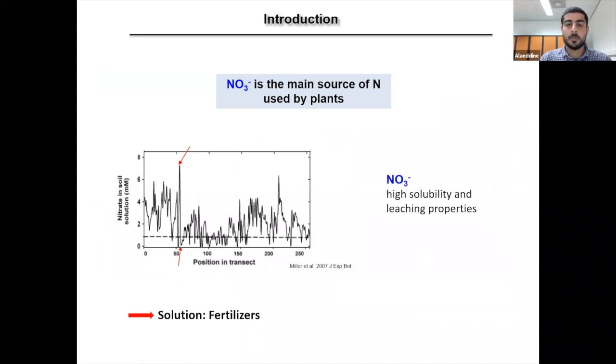We know that nitrate is the main source of nitrogen used by plants. But the problem of nitrate is that it has very fluctuating availability in the soil. As you can see in this figure, that represents the concentration of nitrate in the soil within 250 meters. If we take these two points, for example, we see that nitrate concentration drops from 7 millimolar to few micromolar. Together with its high solubility and leaching property, this makes nitrate very rarely available in the soil.